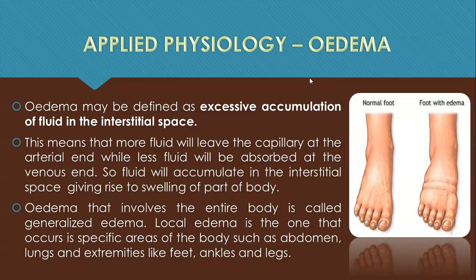Now the applied physiology: edema means excessive accumulation of fluid in the interstitial spaces. This means more fluid leaves the capillary at the arterial end while less fluid is absorbed at the venous end, causing accumulation in the interstitial spaces and swelling. If swelling involves the entire body it is called generalized edema; if it is in a specific area it is called local edema — for example, ascites in the abdomen, or swelling in the lungs, feet, ankles, and legs.